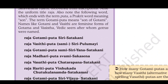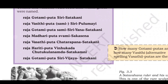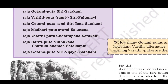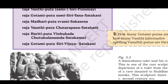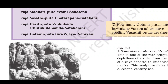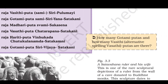Note the feminine forms of Gotama and Washishtha — 'Gotami' is the feminine form for Gotama, and 'Vashishti' is the feminine form for Washishtha. So the Satavahana rulers' names were: Raja Gotami-puta Shiri Satakarni, Raja Vashishti-puta Shiri Pulumai, Raja Gotami-puta Sami Shiri Yana Satakarni, Raja Madri-puta Swami Shakasena, Raja Vastig-puta Chatrapana Satakarni, Raja Hariti-puta Vanukada Chatukurulandama Satakarni, Raja Gotami-puta Siri Vija Satakarni.